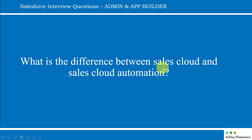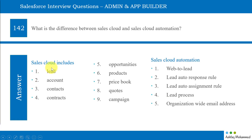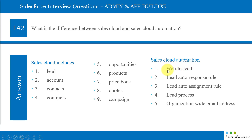The next question is: what is the difference between Sales Cloud and Sales Cloud Automation? Sales Cloud includes leads, accounts, contacts, contracts, opportunities, products, price books, quotes, and campaigns — these are all the different objects we have. You can create a lead, account, contacts, contracts, and opportunities. But what is automation? Anything which automates this process is nothing but Sales Cloud automation. The very first thing in automation is web to lead.